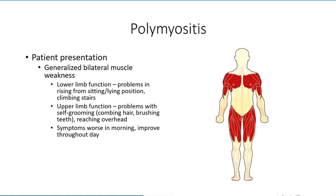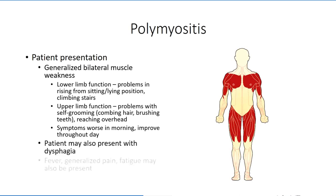Note that this is the opposite of what is typically observed with myasthenia gravis. Weakness may also affect the bulbar muscles, leading to difficulties with swallowing. The patient may also report pain, fatigue, and fever, but these findings are inconsistent.